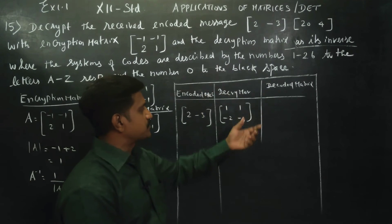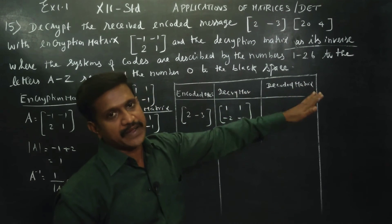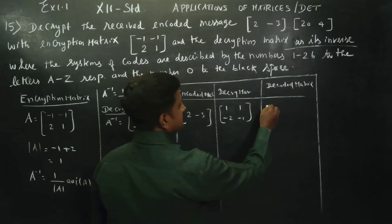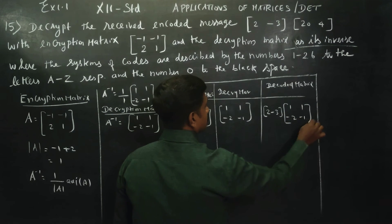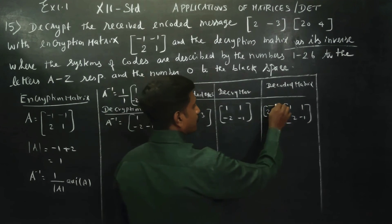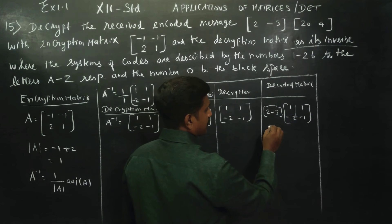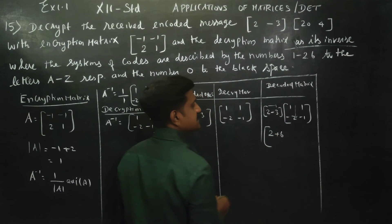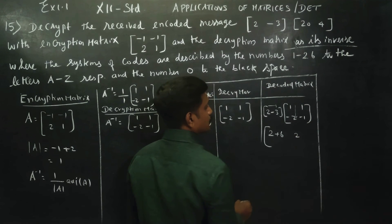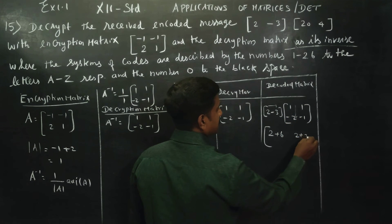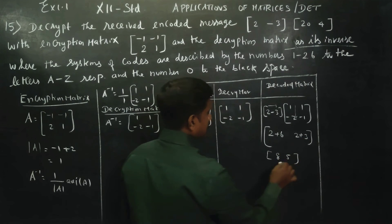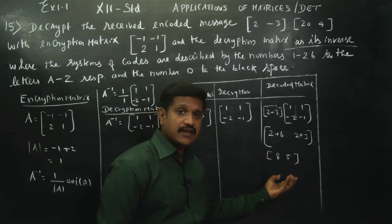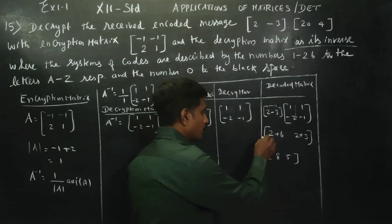We multiply the encoded message matrix by the decryption matrix. So it is: multiply 1, minus 3 into 1, 1, minus 2, minus 1. Row into column: 2 times 1 plus minus 3 times minus 2 gives us 2 plus 6 equals 8, and 2 times 1 plus minus 3 times minus 1 gives us 2 plus 3 equals 5.